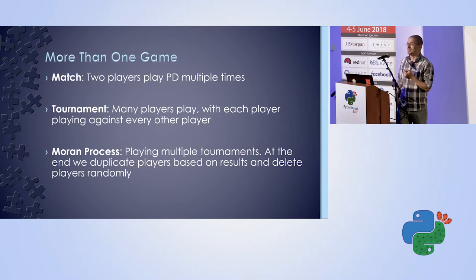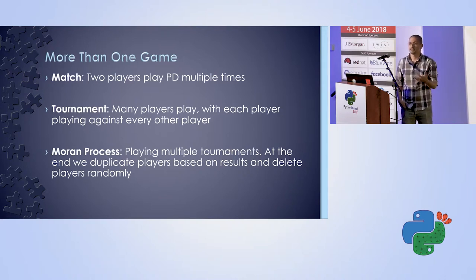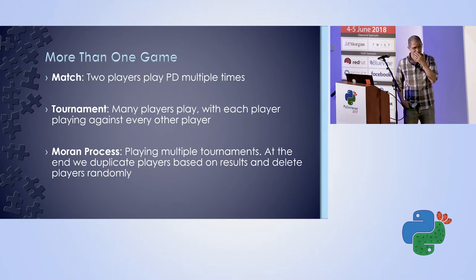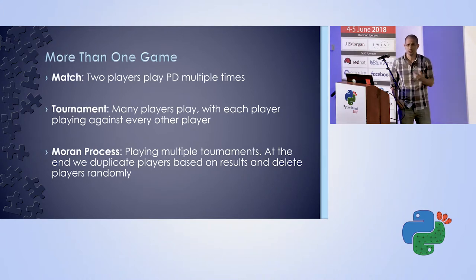The Moran process is also available and really interesting. You take many players, play them all against one another, and at the end of each round more successful players are randomly chosen to duplicate — with a higher chance of duplication if they performed better. To keep the population size constant, some players are deleted randomly. This process is the most common one I've seen used in actual research.